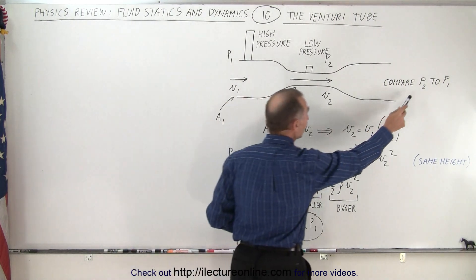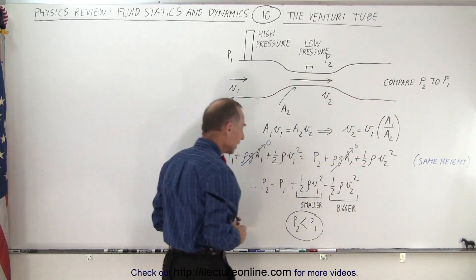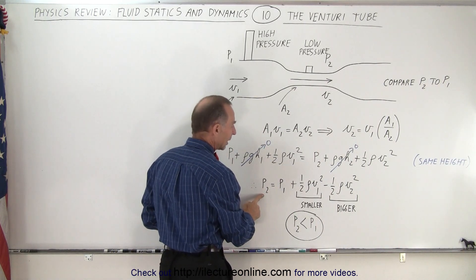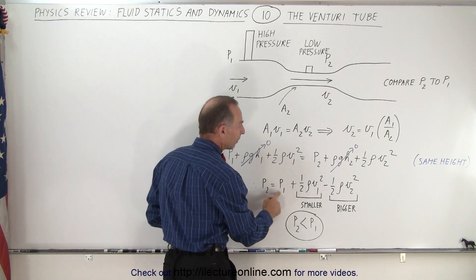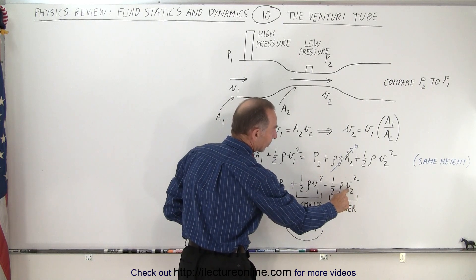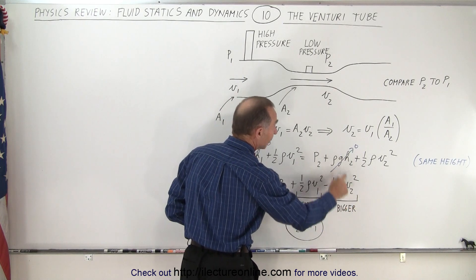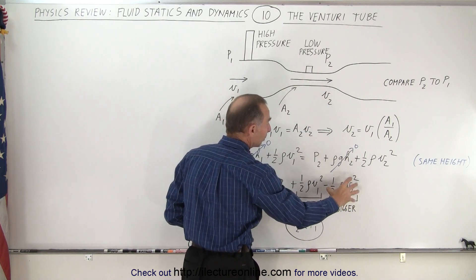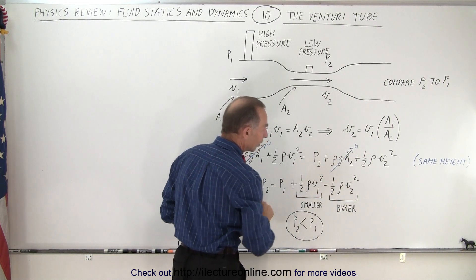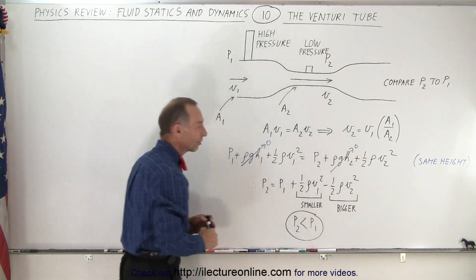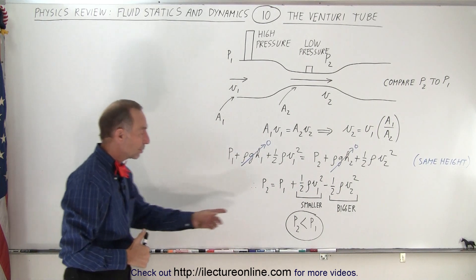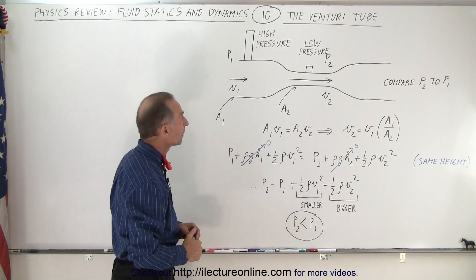We're comparing the pressures at the two points. Notice that if we solve for P2, it has to be smaller than P1, because the term we're subtracting — which has a higher velocity in the narrow part of the tube — is bigger than the term we're adding, which has a smaller velocity in the wider area. So P2 will be less than P1.